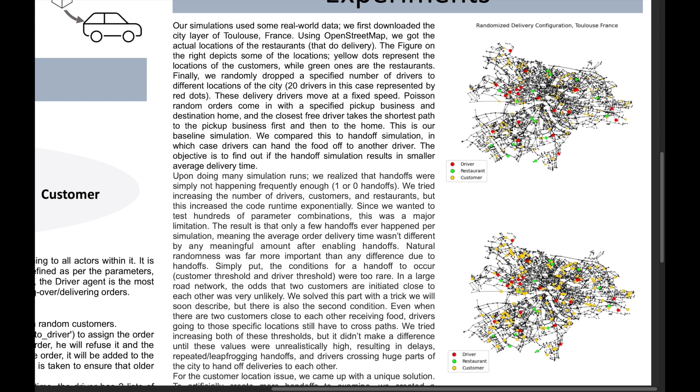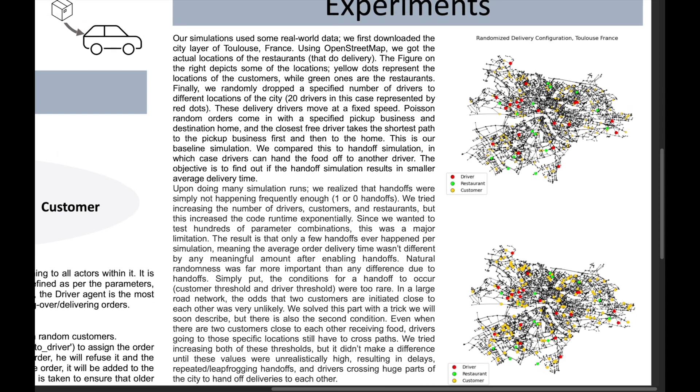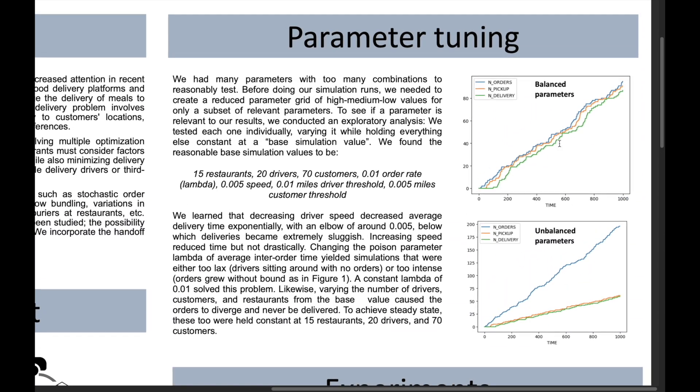We varied the number of each, but settled on 15 restaurants, 20 drivers, and 70 customers, and gave a stream of orders coming in with a Poisson order rate lambda of 0.01. We found that these parameters yielded a steady state of enough drivers to complete orders without diverging.